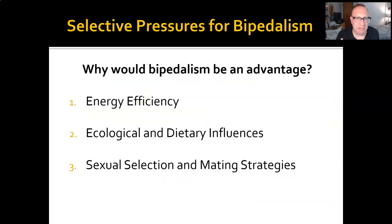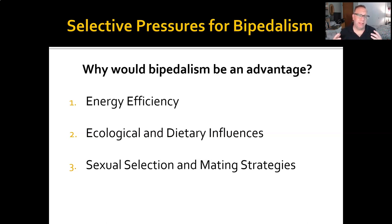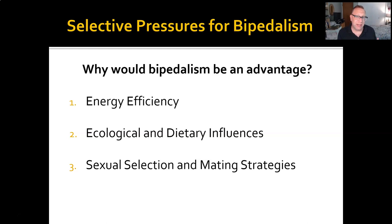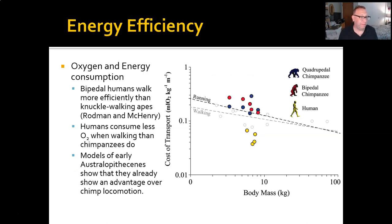There are three main kinds of theories about the evolution of bipedalism. Some make a case for bipedalism being energy efficient. Others make a case for ecology and diet influencing the need for bipedalism. And finally, there are those that argue that bipedalism is largely the result of a switch in mating strategies and sexual selection. I'm going to start with energy efficiency.